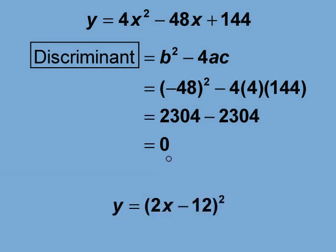The factored form of this equation is y equals the quantity 2x minus 12 squared. When the discriminant is equal to 0, a quadratic can be written as a binomial squared, and you can solve these quadratic equations in your head.